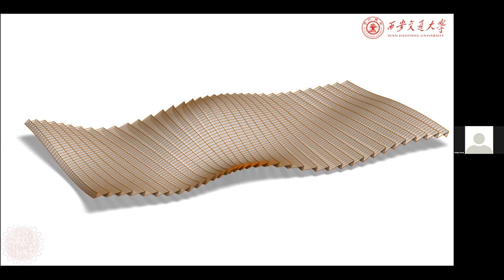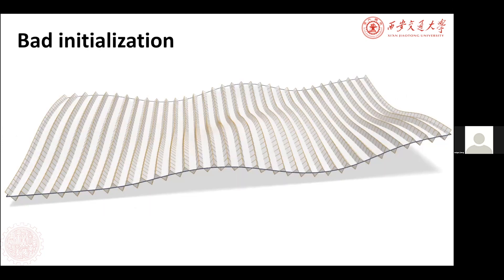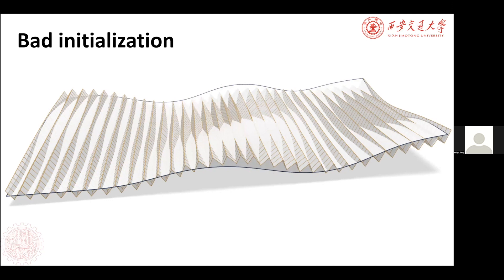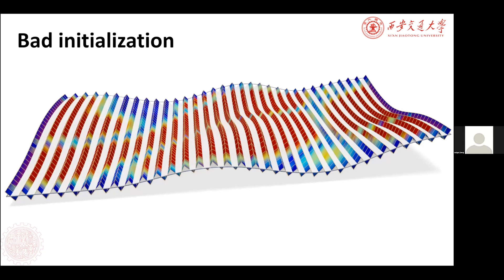To emphasize the importance of initialization, here is an example of bad initialization, generated based on a given quad mesh. If we require this given mesh to be isometric to a 2D plane, the structure will go far away from the reference shape. If we add the weight of closeness, we cannot get planar quads — here the red means the quads are not planar. Under such initialization, we cannot get very good computational results.